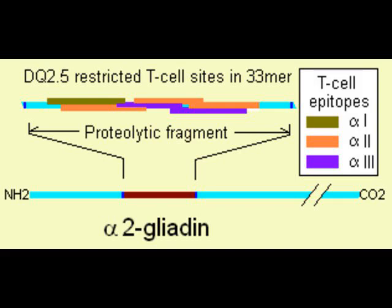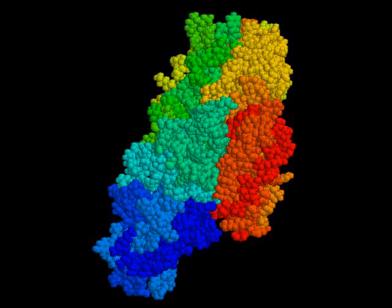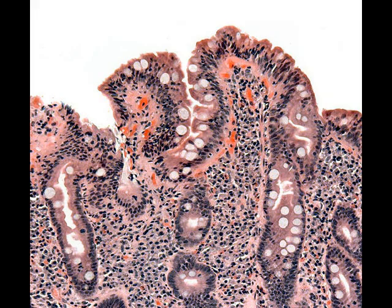This condition has several other names, including celiac disease, celiac sprue, non-tropical sprue, endemic sprue, gluten enteropathy or gluten-sensitive enteropathy, and gluten intolerance.